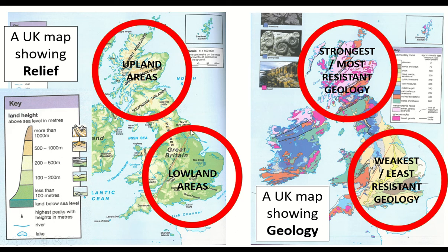One other thing I just want to point out is this little red line - it's called the Tees-Exe line, and the Tees-Exe line is our rough dividing point between the UK's upland areas and the UK's lowland areas. Anything to the south and east of the Tees-Exe line is what we'd call Lowland Britain, and anything to the north and west of it is Upland Britain. So if they use the Tees-Exe line in an exam, you know what that means.